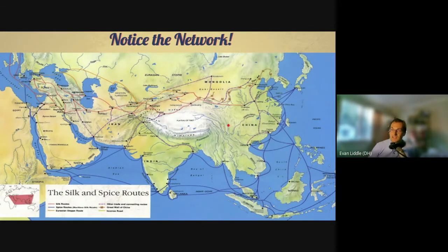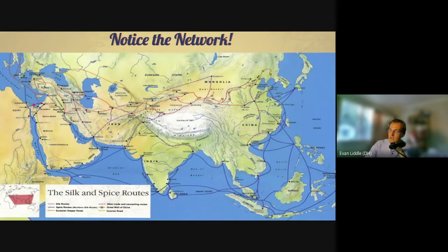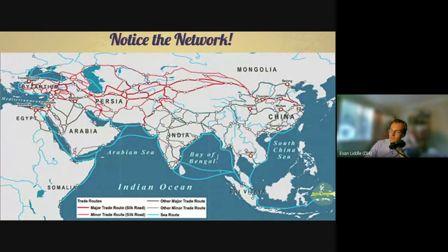The Silk Road runs roughly from Asia — it might end in Korea or Japan depending on how you define it — all the way to Europe. It might end in Constantinople, or some maps have it going to Rome, or stopping in the Middle East around Cairo or Damascus. Every map is a little different. The point is, it's a series of networks running from East Asia all the way to Europe and the Middle East.